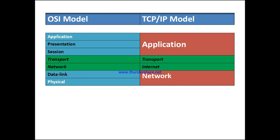The application layer in TCP/IP handles HTTP and HTTPS for human interaction, presentation in viewable formats like ASCII and JPEG, encryption and decryption algorithms, and session maintenance — such as managing multiple tabs and disconnections. This is the work of those three combined OSI layers in the TCP/IP application layer.